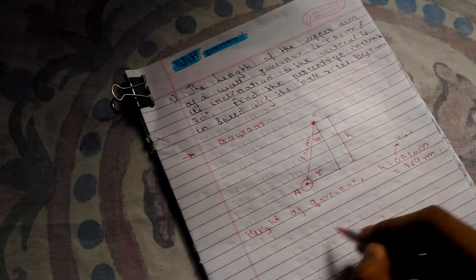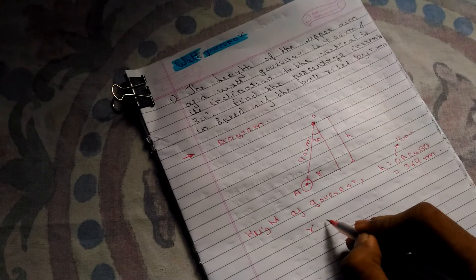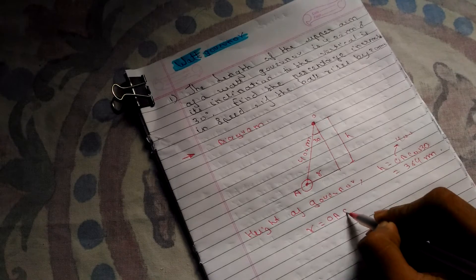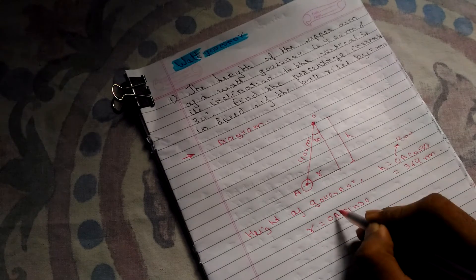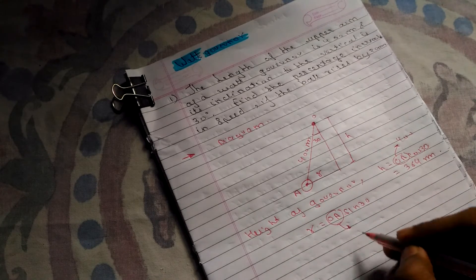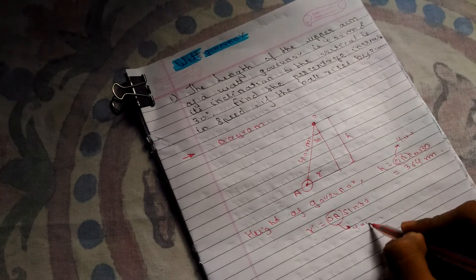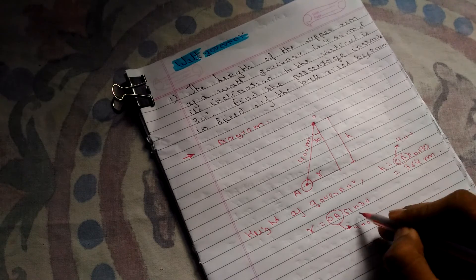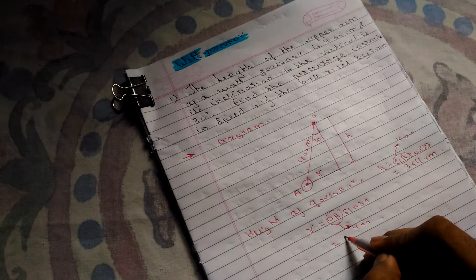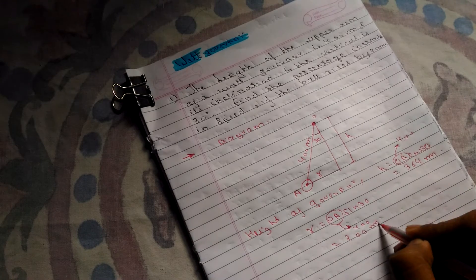And also R can be written as R equals OA sin 30, where OA is 400 mm. So R equals 200 mm.